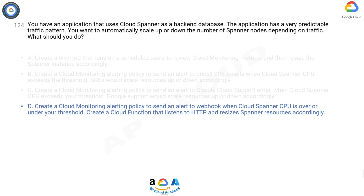The correct answer is D. Option D is the correct answer for automatically scaling the number of Spanner nodes based on traffic patterns.